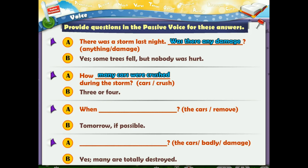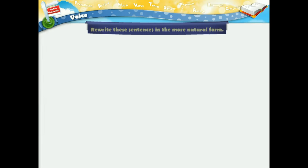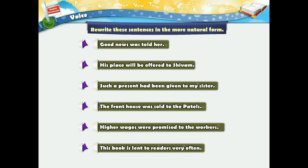Rewrite these sentences in their more natural form. Good news was told her. His place will be offered to Shivam. Such a present had been given to my sister. The front house was sold to the Patels. Higher wages were promised to the workers. This book is lent to readers very often.